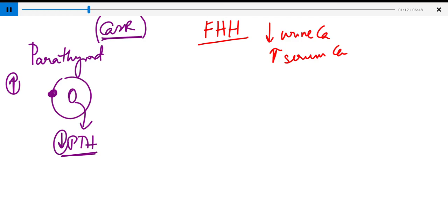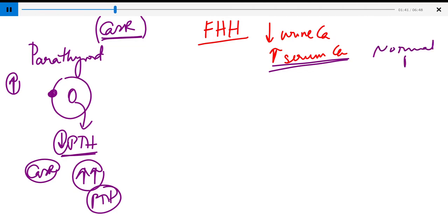In a patient with FHH, the CASR is not responding to serum calcium concentrations appropriately. It's not as sensitive as it should be. So you need a higher serum calcium concentration to keep the PTH normal. These patients have high serum calcium and normal PTH.